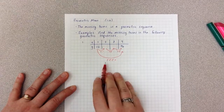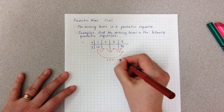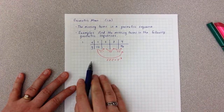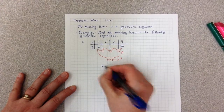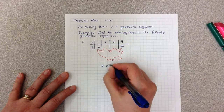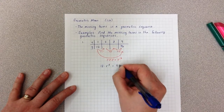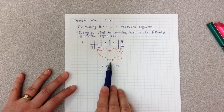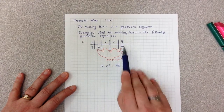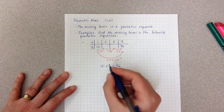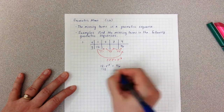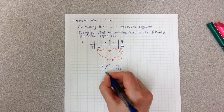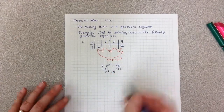R times R times R is R cubed. So I can set up an equation: 12 times R cubed equals 96. I'm going to divide both sides by 12, which gets me R cubed equals 8.